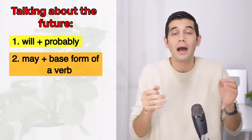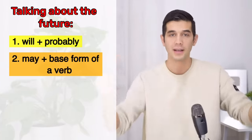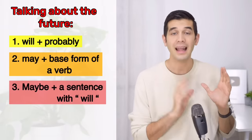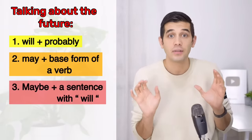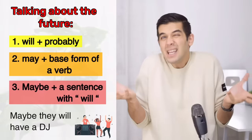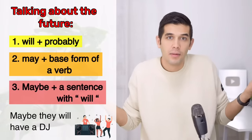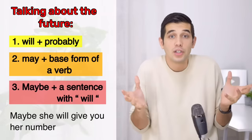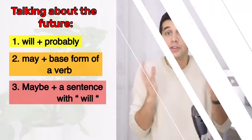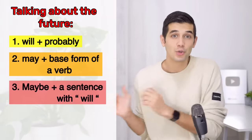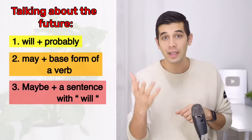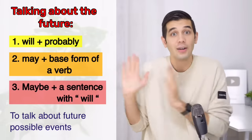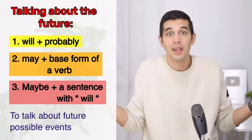Another way to talk about future possibilities is to start your sentence with maybe and then use will: 'maybe they will have a DJ,' 'maybe I'll call you this evening,' 'maybe she will give you her number.' So these are the three most common structures you can use to talk about future possible events. Now let's see how to use them in a real dialogue.